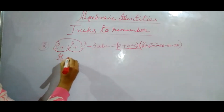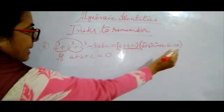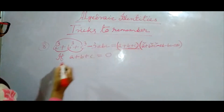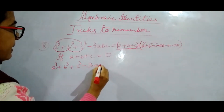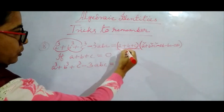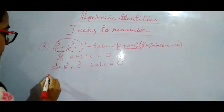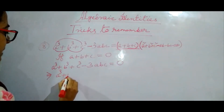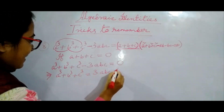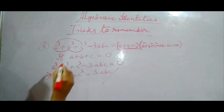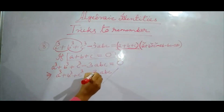Now also one important thing: if sometimes A plus B plus C is equal to 0, replace this in the main identity. So A cube plus B cube plus C cube minus 3ABC is equal to 0 into any expression, which always equals 0. So we get A cube plus B cube plus C cube is equal to 3ABC. So whenever A plus B plus C is equal to 0, then A cube plus B cube plus C cube reduces to 3ABC.